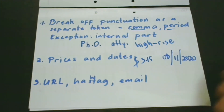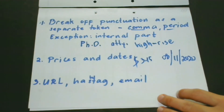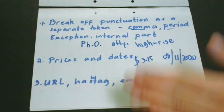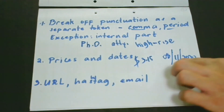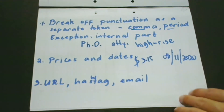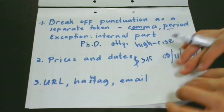Rule 3: when you see a URL, a hashtag, or an email address, special characters and numbers are also kept — for the same reason as Rule 2: they are considered as one unit.